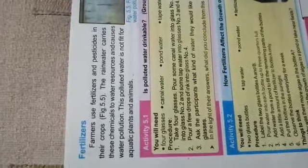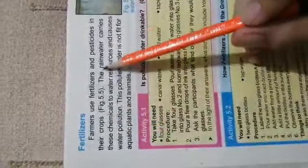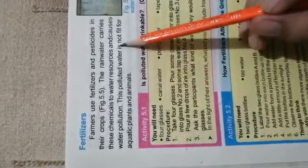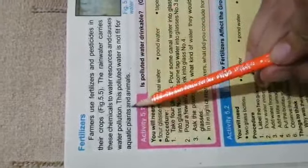These chemicals can kill fish and other aquatic animals and plants. The last source is fertilizers — farmers use fertilizers and pesticides on their crops, and rainwater carries these chemicals to water resources, causing water pollution. This polluted water is not fit for aquatic plants and animals.